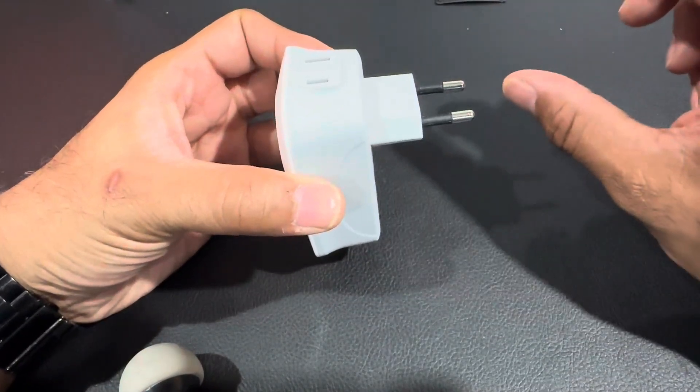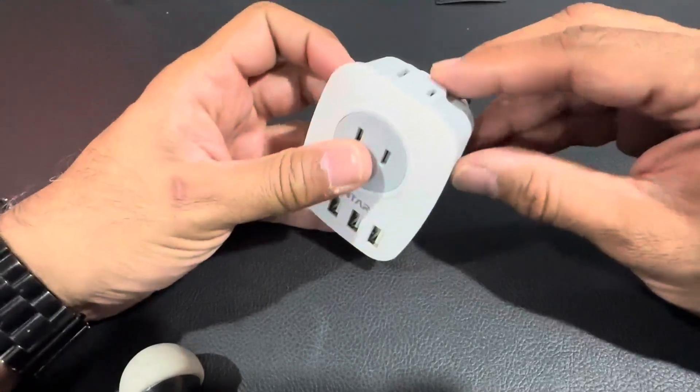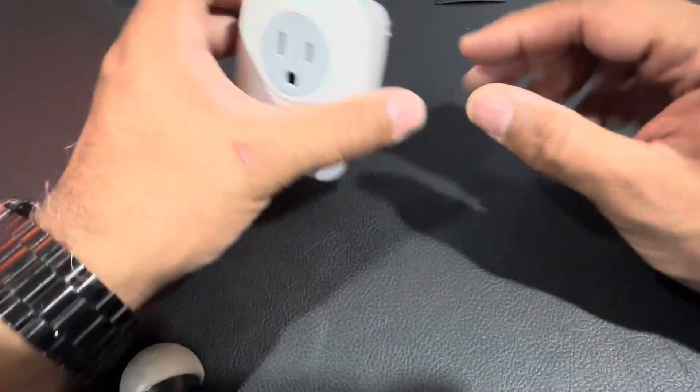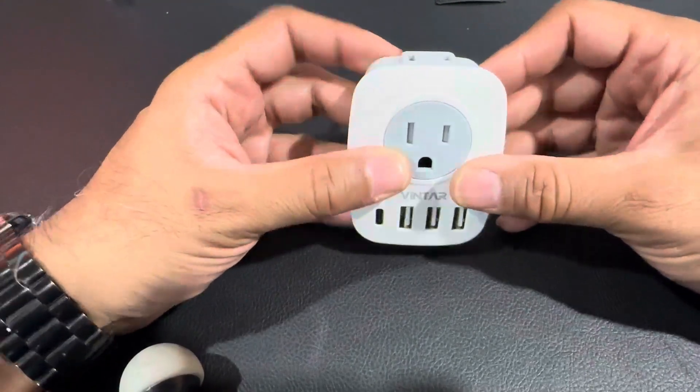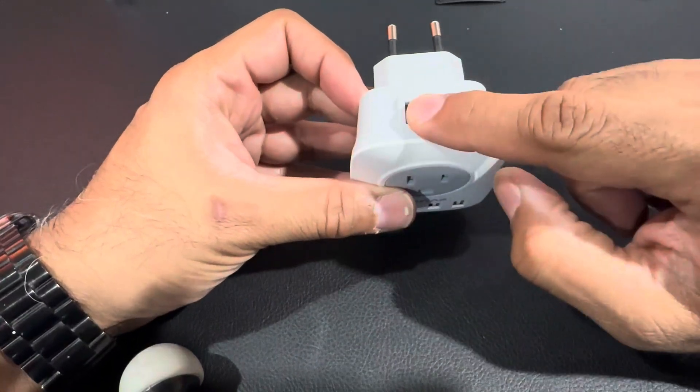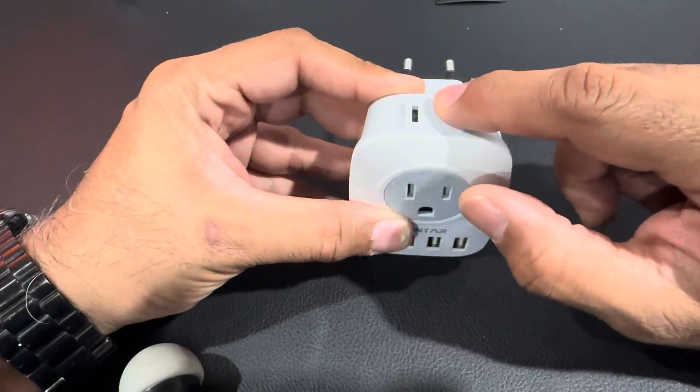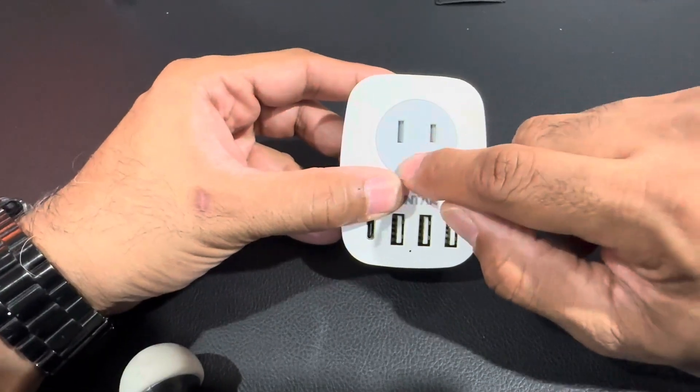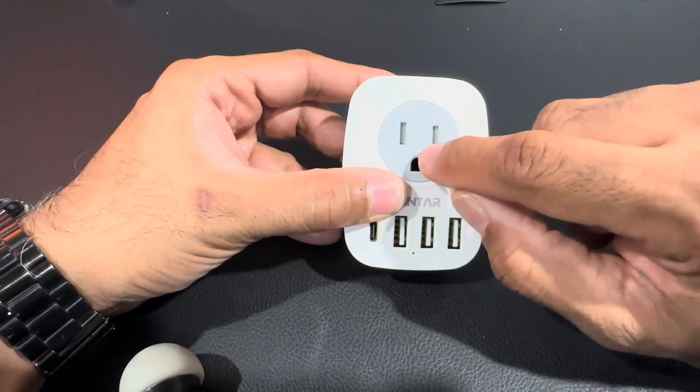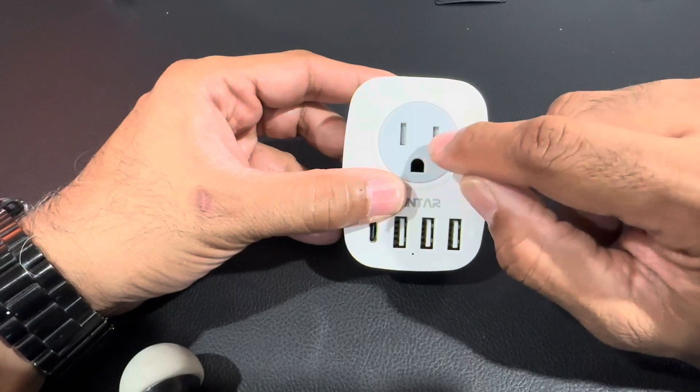The positives here are that you get two outlets: one just a regular outlet and then one where it has the third prong in there, especially for traveling with hair dryers or any type of appliances.